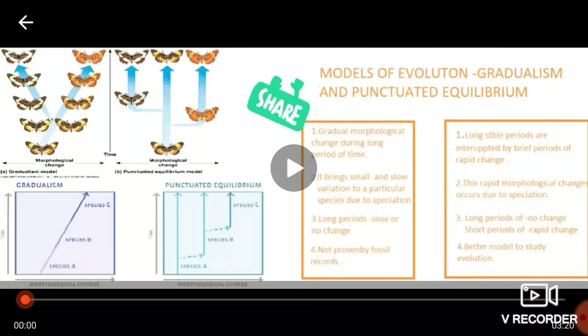So you can see in this picture, in the first picture, two new species are formed in the gradualism model. In punctuated equilibrium model, suddenly a brief period of rapid change occurred and a completely new species formed. And in the graph, the x-axis is for the morphological change and the y-axis for time.